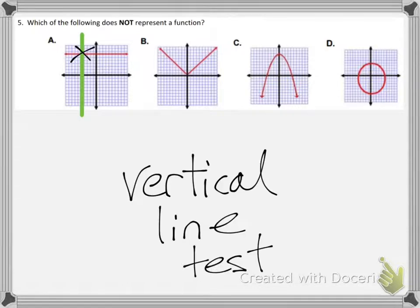B is also a function, so is C. It is choice D. That is not a function because the green line intersects the circle twice.